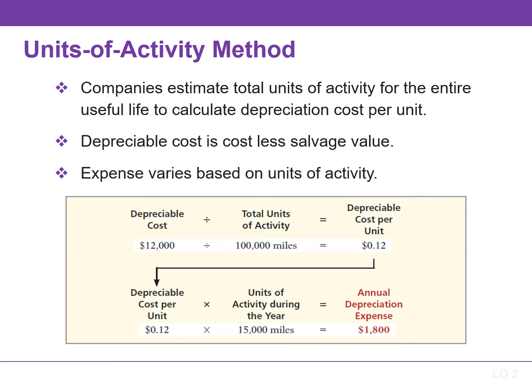In this example, the depreciable cost is $12,000, and that is found by taking the cost of $13,000 and subtracting the salvage value of $1,000. The estimated useful life of this asset is 100,000 miles, so the depreciation cost per unit is $0.12.